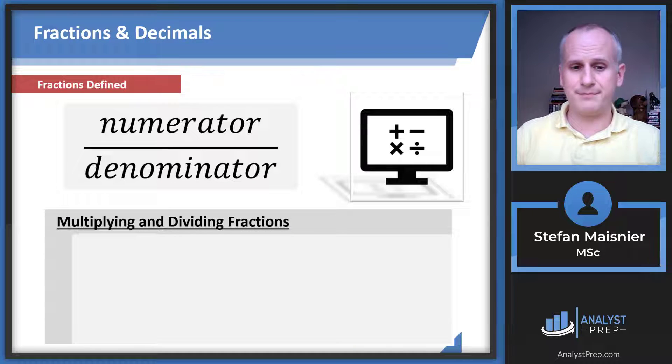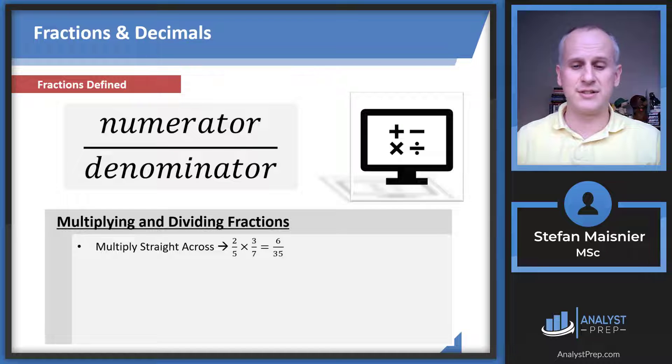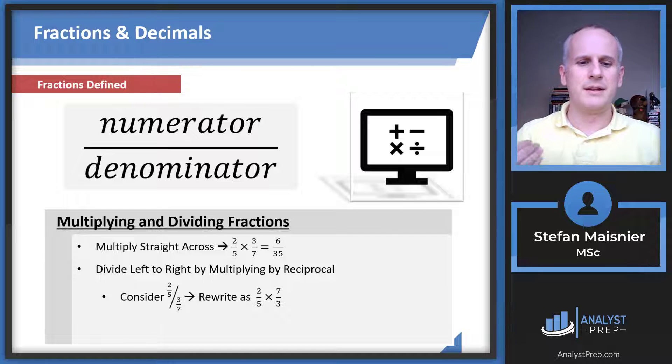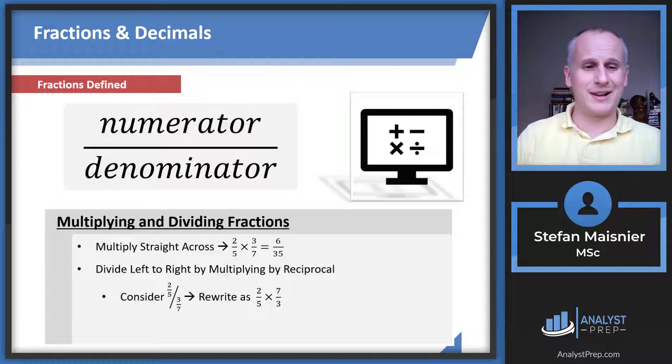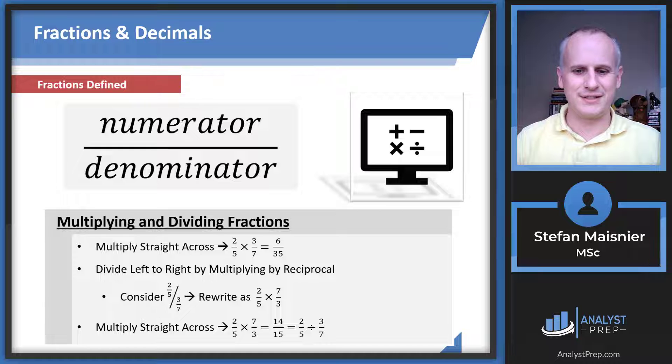For multiplying fractions, just multiply straight across. Two fifths times three sevenths is six thirty-fifths. Division requires more attention. You divide left to right by multiplying the first fraction by the reciprocal of the second fraction. So two fifths divided by three sevenths becomes two fifths times seven thirds, which equals 14 fifteenths.